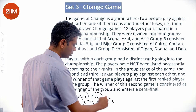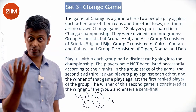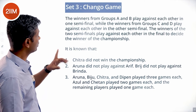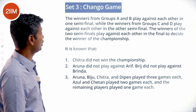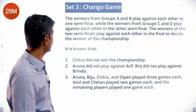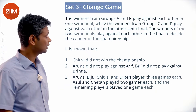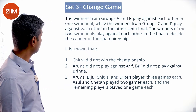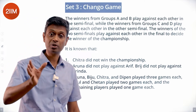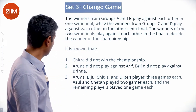The winners from Groups A and B play against each other in one semi-final, while the winners from Groups C and D play in the other semi-final. The winners of the two semi-finals then play in the final to decide the championship winner.